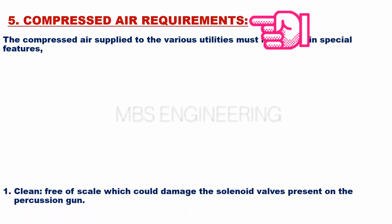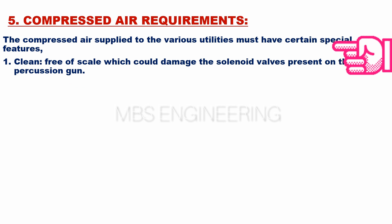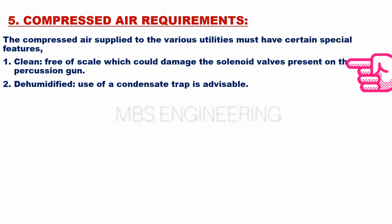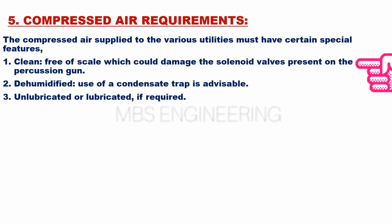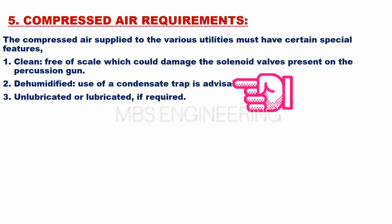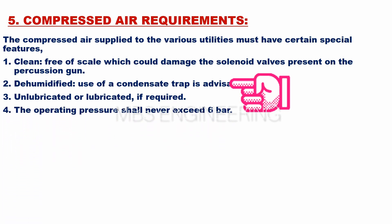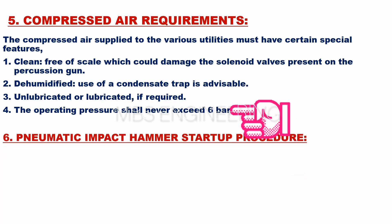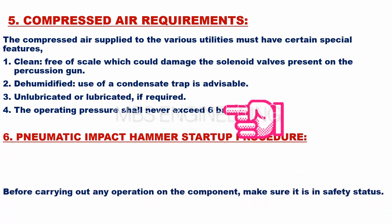The compressed air supplied to the various utilities must have certain special features. The first requirement is that the compressed air should be clean and free of scale, which could damage the solenoid valves present on the percussion gun. The second requirement is that the compressed air should be dehumidified — use of a condensate trap is advisable. The third requirement is that the compressed air should be unlubricated or lubricated if required, and the operating pressure shall never exceed 6 bars.